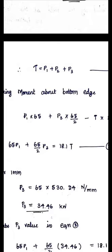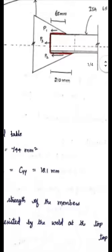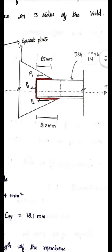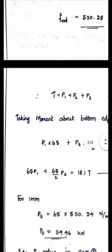Considering horizontal equilibrium: the force T acts from left to right, while P1, P2, and P3 act in the opposite direction. Therefore, P1 + P2 + P3 = T. This is equation number 1.